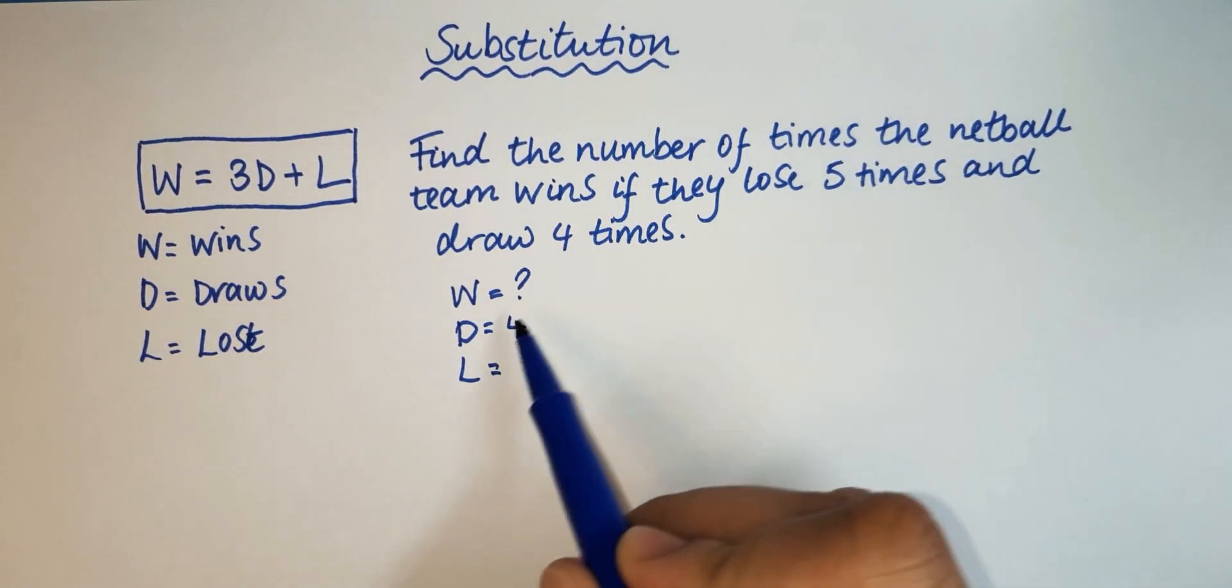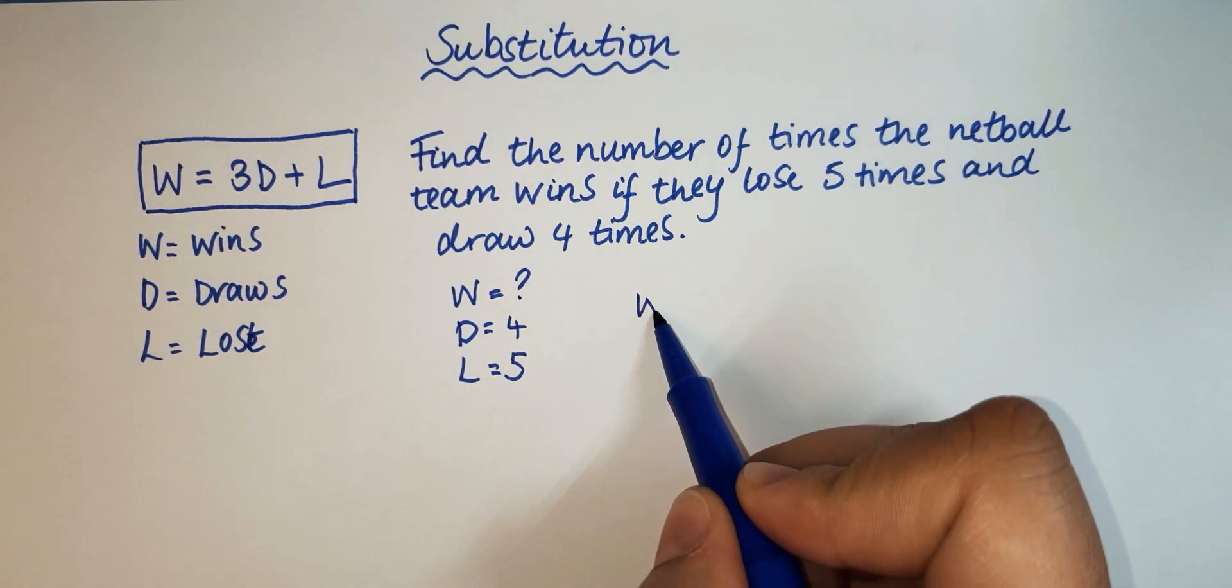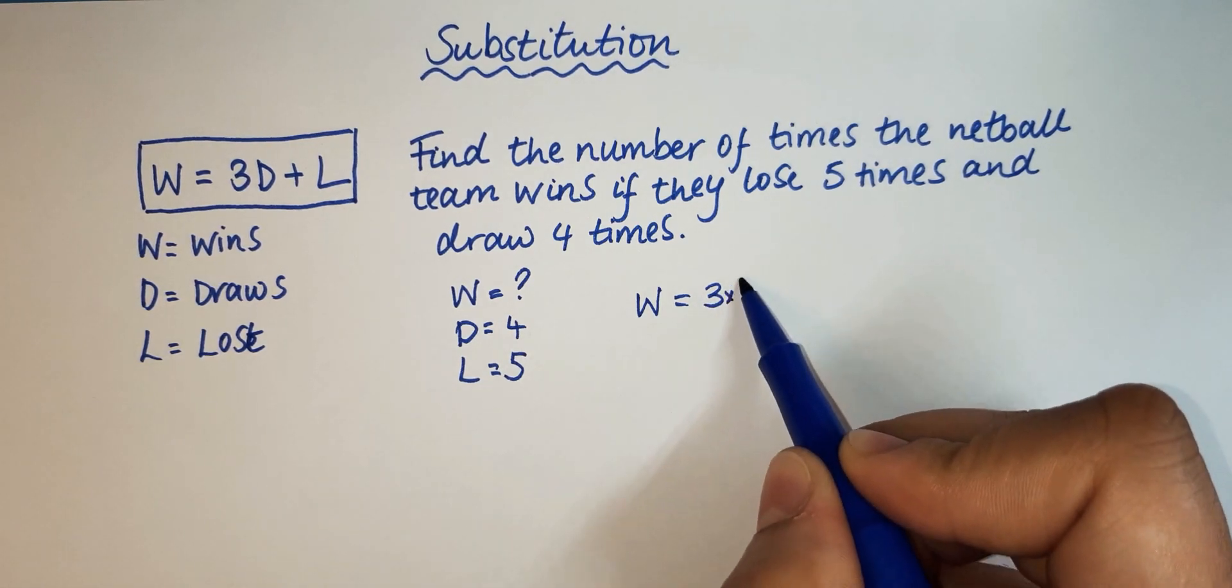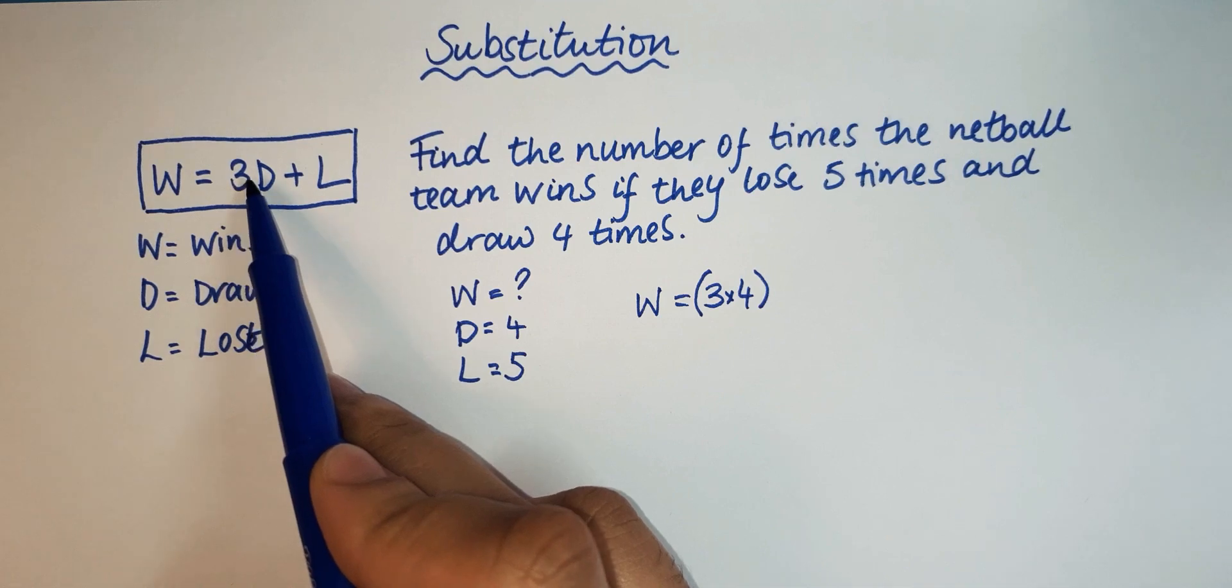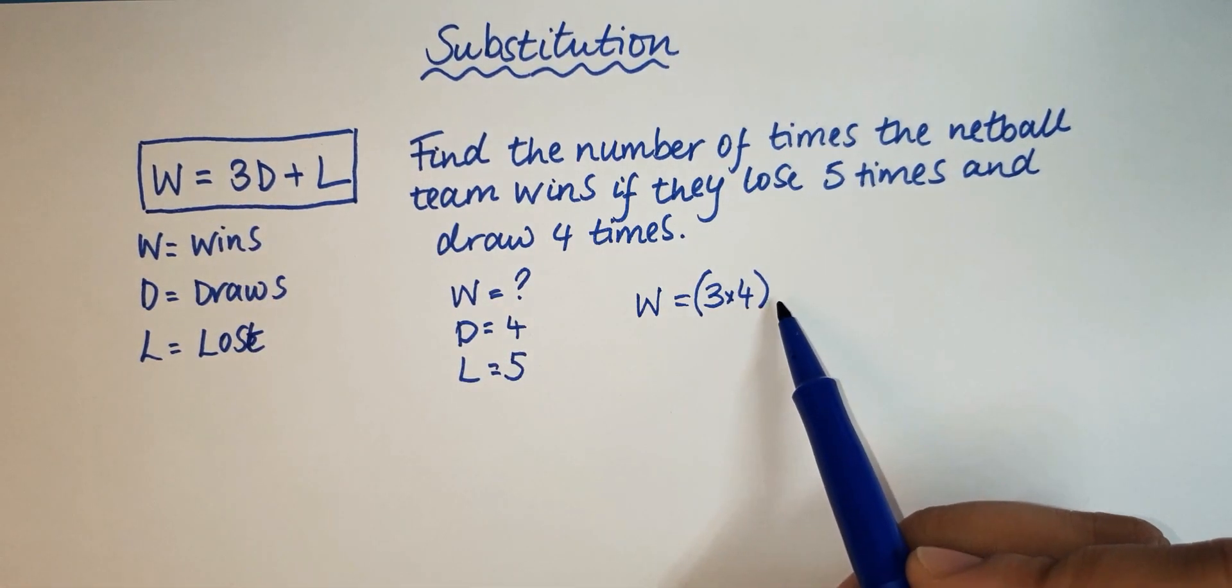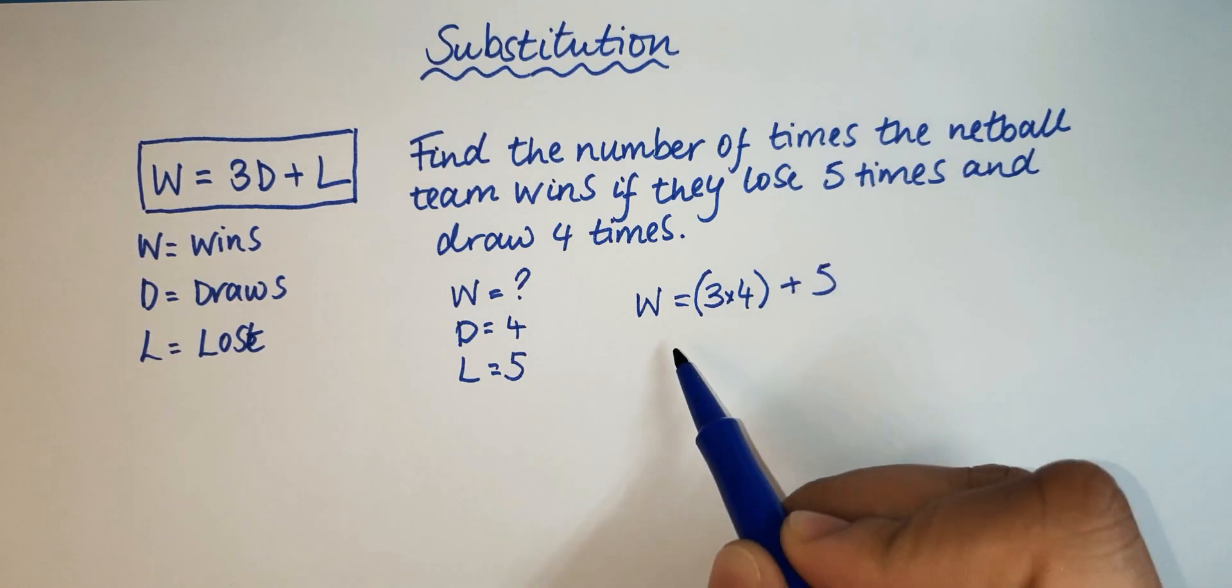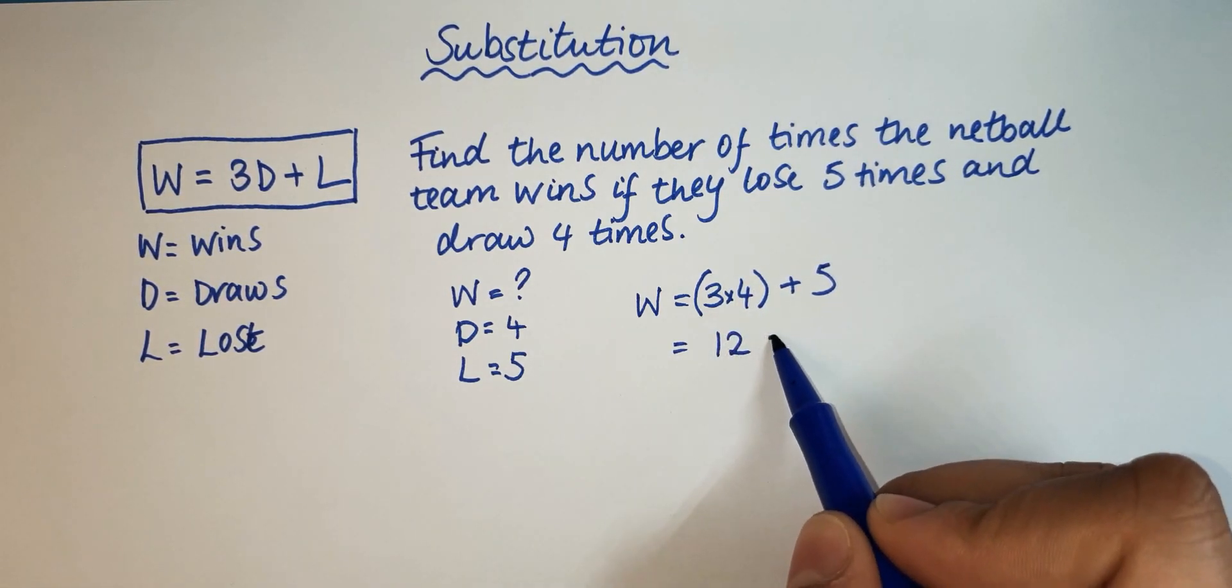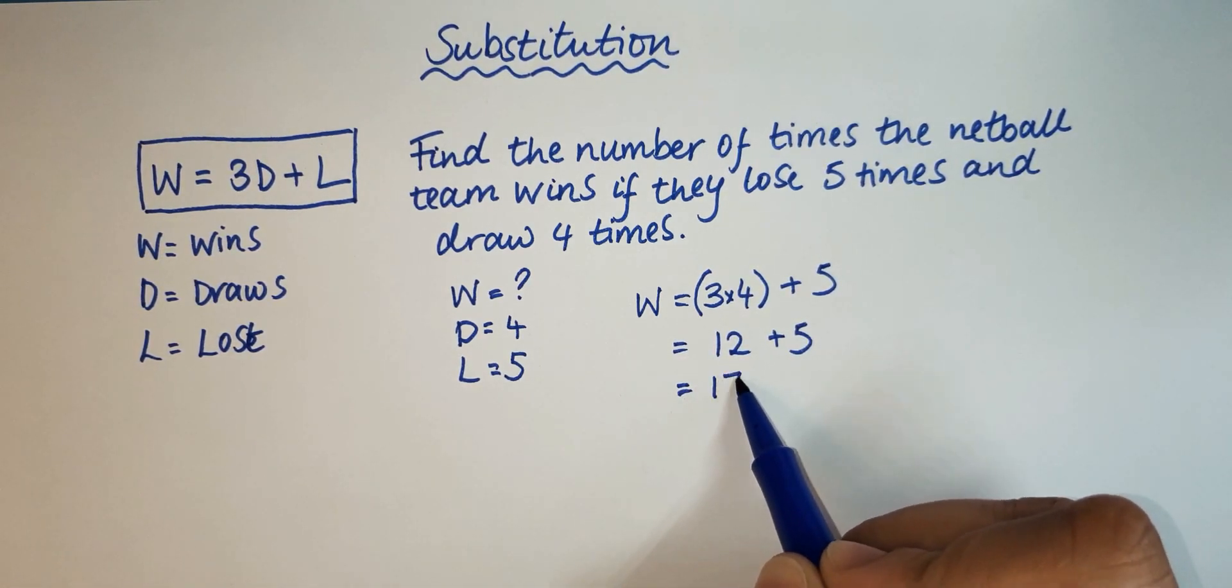And the number of losses is five. So all we have to do is write it into the equation: W is equal to 3 times 4, we can put that in brackets, so this just means 3 times D, so 3 times 4, plus the L which is 5. So here 3 times 4 is 12, and 12 add 5 is just 17.